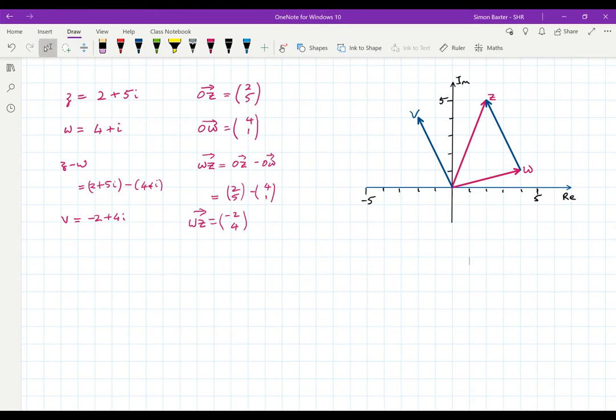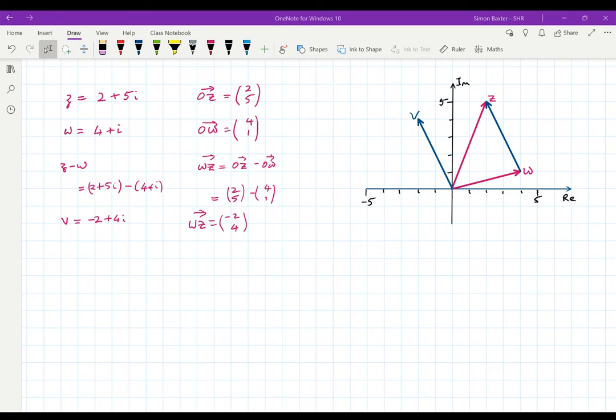I've drawn this on the diagram for you and you can see that there is no difference at all between the vector WZ and the vector OV. As far as vectors are concerned they are both backwards 2 and up 4. This would be the same for any two complex numbers which I considered and their corresponding vectors.